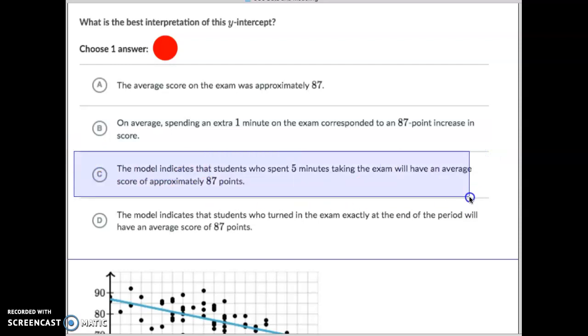The model indicates that a student who spent five minutes taking the exam would have an average score of approximately 87. That has nothing to do with the problem.